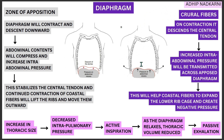The increase in thoracic size decreases intra-pulmonary pressure, and air moves from outside high pressure to inside low pressure, creating active inspiration. It is called active inspiration because the diaphragm actively contracted to bring the air in. Once oxygen is used and carbon dioxide returns, we need to exhale. Exhalation happens passively — as the diaphragm relaxes, thoracic volume is reduced, and air is expelled.